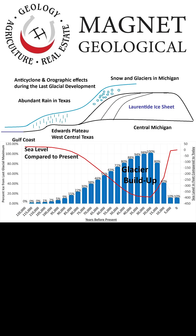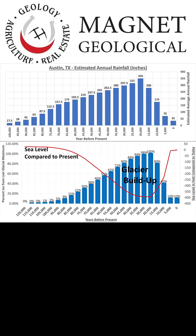It took about 100,000 years for this last glacial episode to develop — it takes longer for snow to build up than to melt. During this time period, it is likely that Texas rainfall increased proportionally with the increasing glacial development. Central Texas went from much less rainfall than today to perhaps as much as 10 times the rainfall at the last glacial maximum.